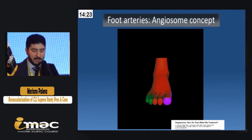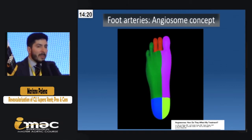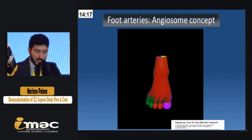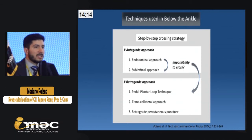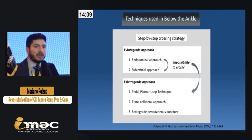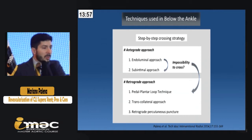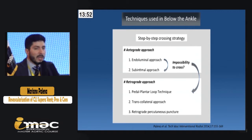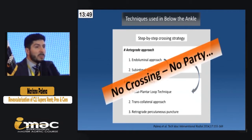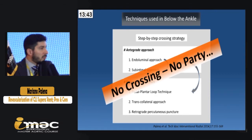Depending on the lesion location, we must increase the flow for the anterior tibial or for the posterior tibial. How we approach this type of occlusion? We have a step-by-step crossing strategy. We always try to start with an antegrade axis, first trying to cross the lesion intraluminally. If it fails, we shift to a subintimal approach. Finally, the last option is the retrograde approach — transcollateral, pedal-plantar loop technique, or retrograde access. The most important thing is that 50% of our procedure is crossing. If we fail to cross, we fail to treat the patient.